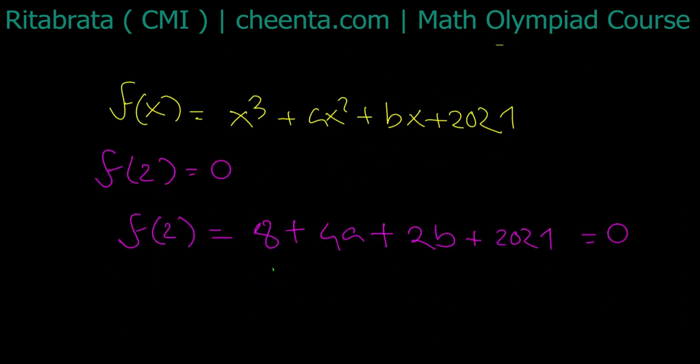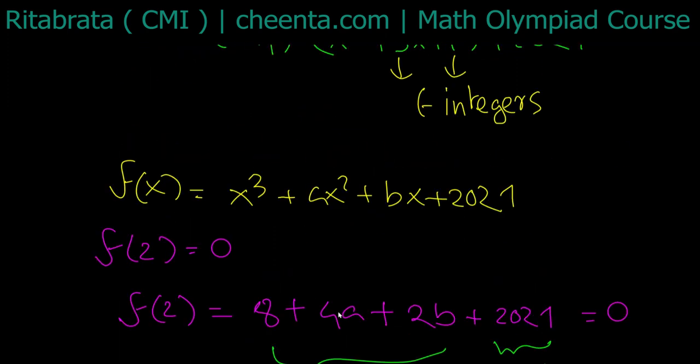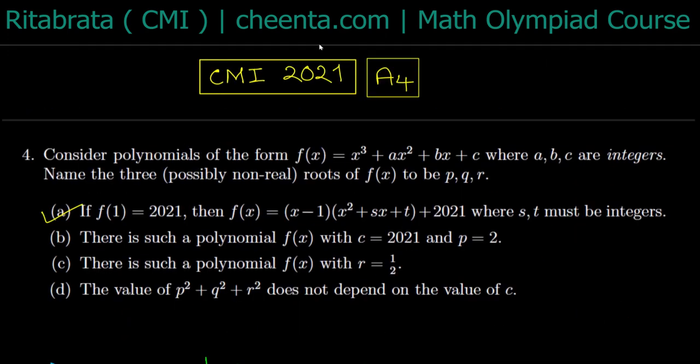8 + 4a + 2b is an even integer irrespective of any integer value of a and b. So this is always even, and 2021 is odd. Even plus odd is odd, so this gives me 0 is an odd number. But 0 can never be odd, so this is a contradiction. From there, we conclude part (b) is false.